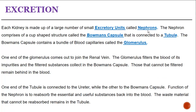Each kidney is made up of a large number of small excretory units called nephrons. The nephrons comprise of a cup-shaped structure called the Bowman's capsule that is connected to a tubule, and the Bowman's capsule contains a bundle of blood capillaries called the glomerulus. It takes millions of nephrons to form one kidney.